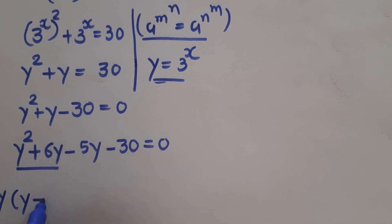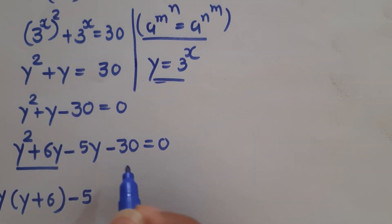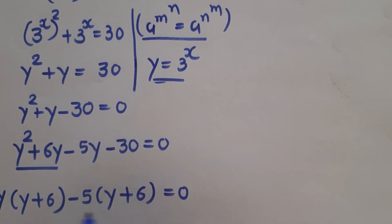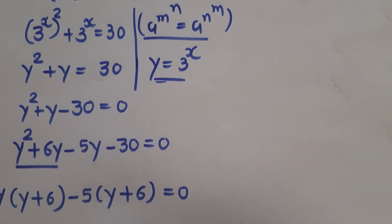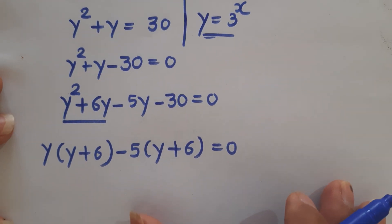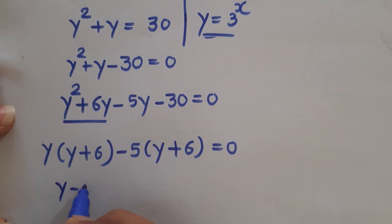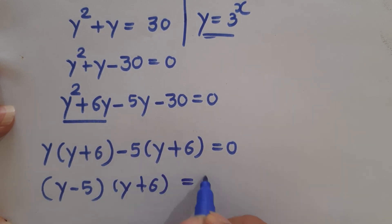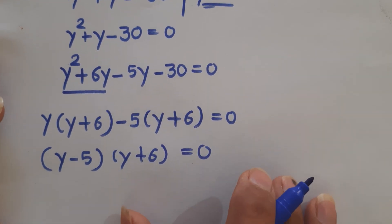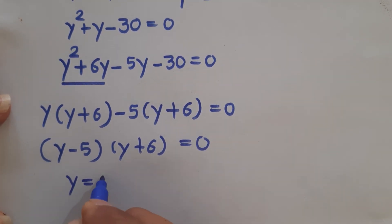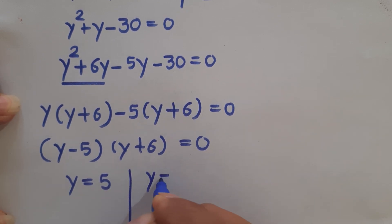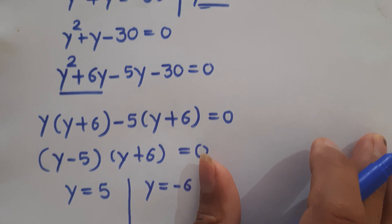We take y common from the first two terms to get y(y + 6), and then take minus 5 common from the last two terms to get minus 5(y + 6), so we have (y minus 5)(y + 6) equals zero. This gives us two solutions: y equals 5 and y equals minus 6.